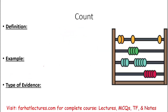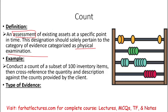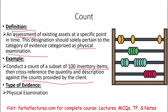Count means an assessment of existing assets at a specific point in time — how many units do we have? This should pertain to the category of evidence classified as physical examination, because you are counting things, and things are assets. An example would be to conduct a count of a subset of 100 inventory items, then cross-reference the quantity and description against the count provided by the client. The type of evidence is physical examination, because you are dealing with existing assets — unlike inspection, which deals with documents that have no intrinsic value.